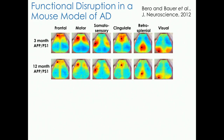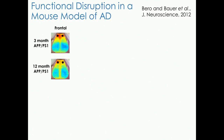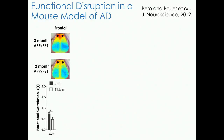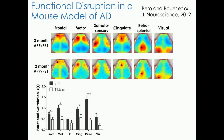Our first application was in collaboration with Dave Holtzman's group, looking at a mouse model of Alzheimer's disease. Young mice exhibit very normal, bilaterally symmetric functional connectivity patterns, but the 12-month age group starts to exhibit appreciable functional disruption. One way to compress these data into a single number is to look at homotopic connectivity — connectivity between left-right seed pairs. We find appreciable decline in frontal cortex, and looking at other brain regions, every region is disrupted to varying degrees.